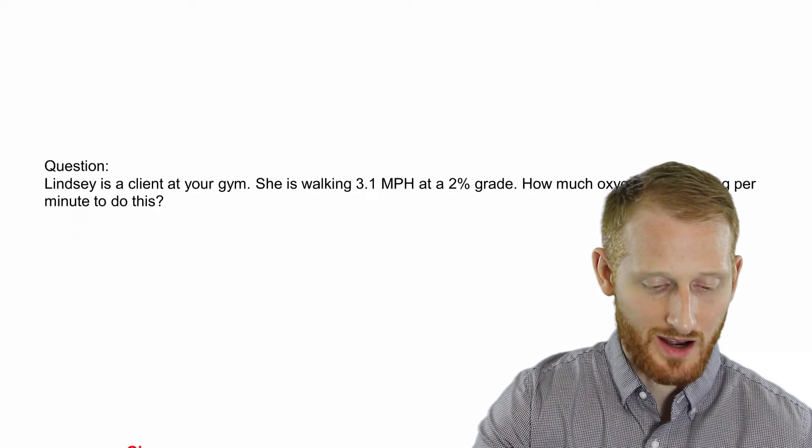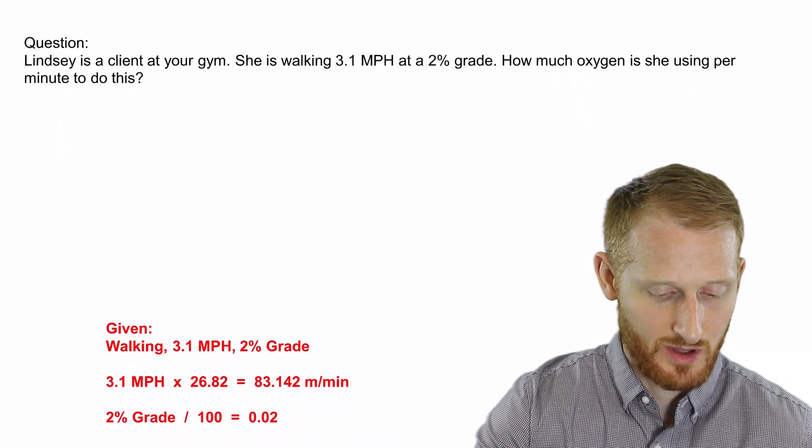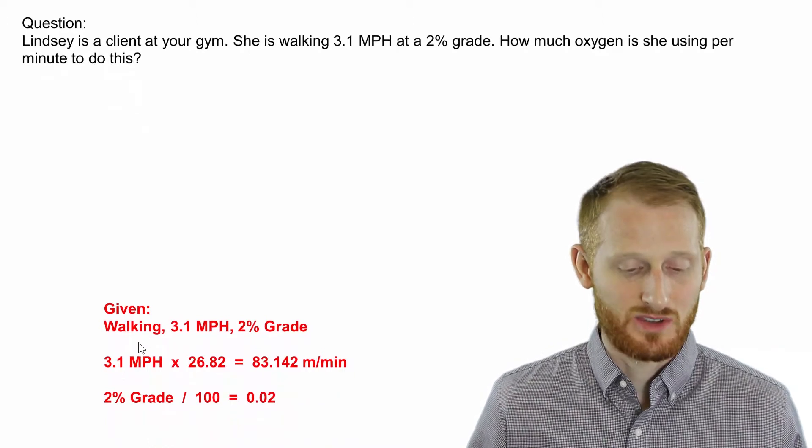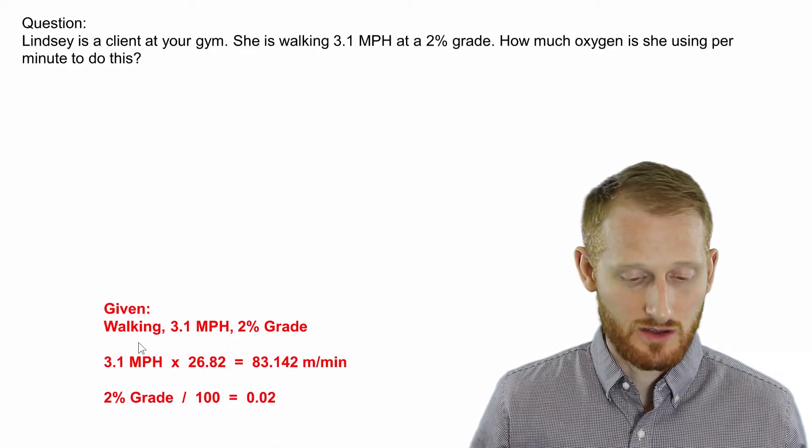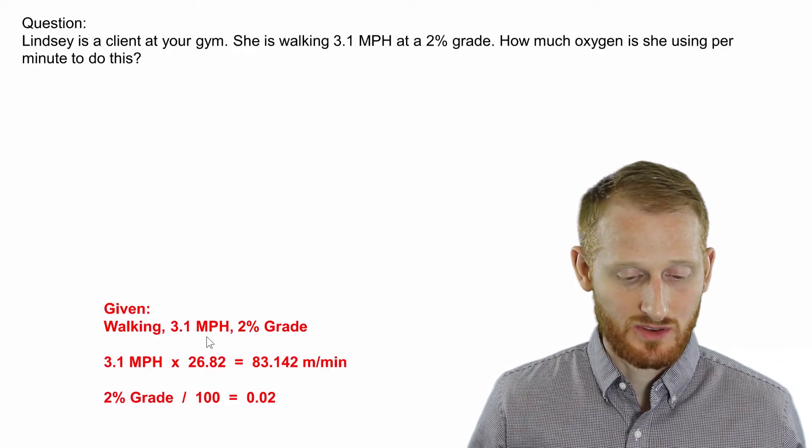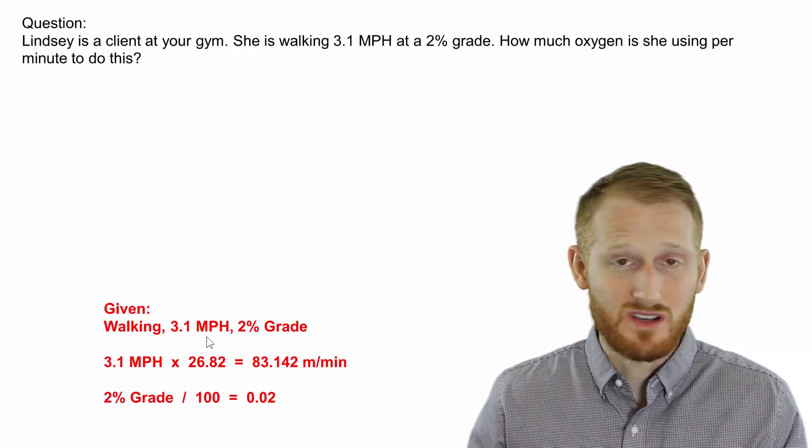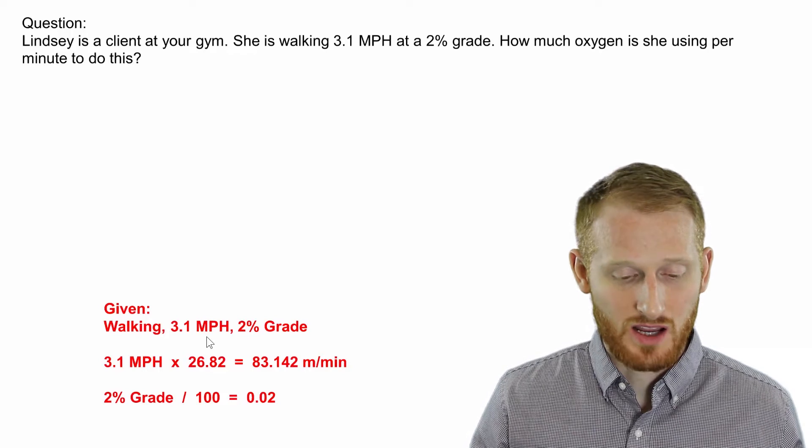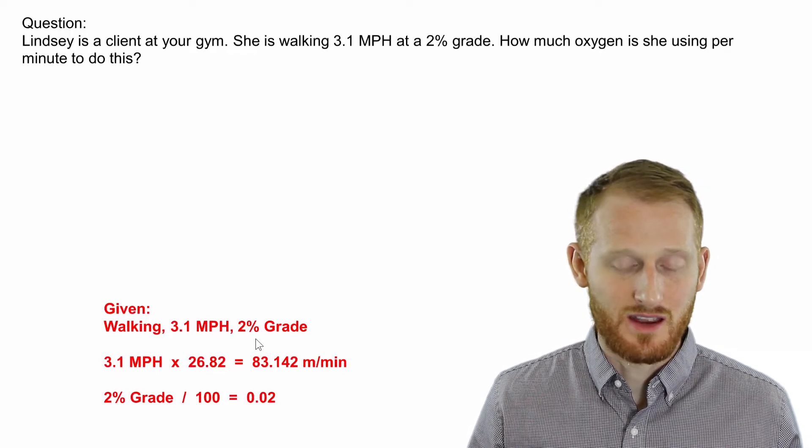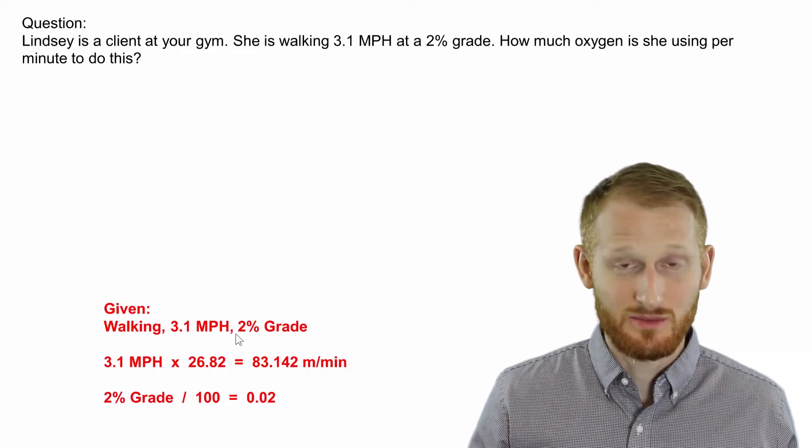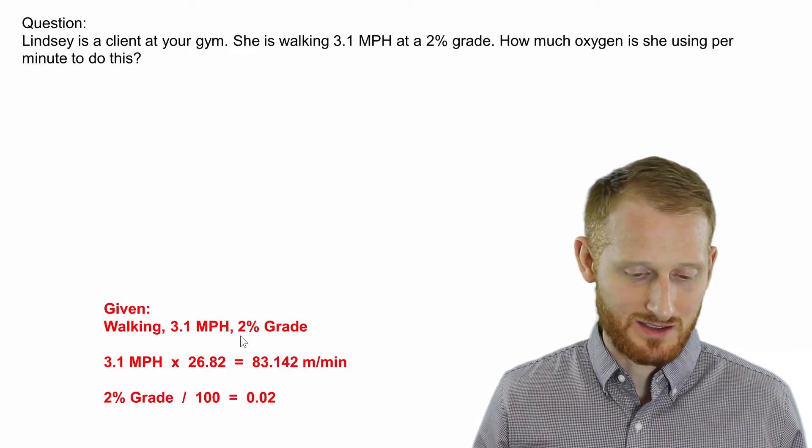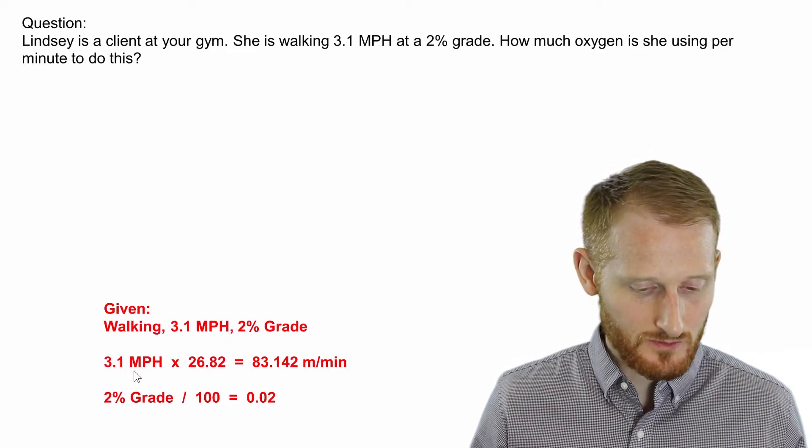Let's look at our given variables. We have walking as our exercise modality, which will help us pick the correct equation. We have 3.1 miles per hour as the treadmill speed, or just the walking speed if you're walking on a flat surface like a track. We have 2% grade as the incline, which obviously couldn't be a track, but maybe it's a fairly consistent hill.